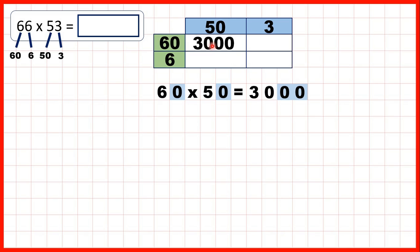So we need 3000 in this box here. For this box, we need to work out 60 times 3. That's 180, because 6 times 3 is 18. And then, we need one end zero.